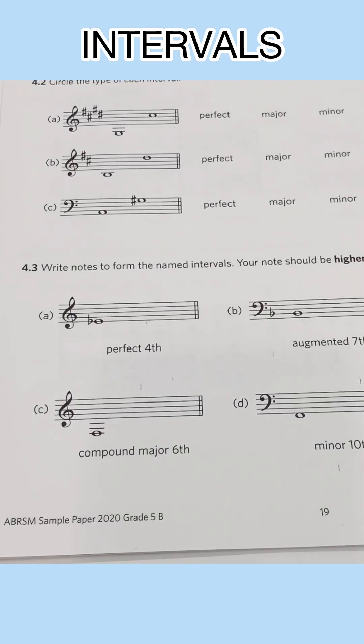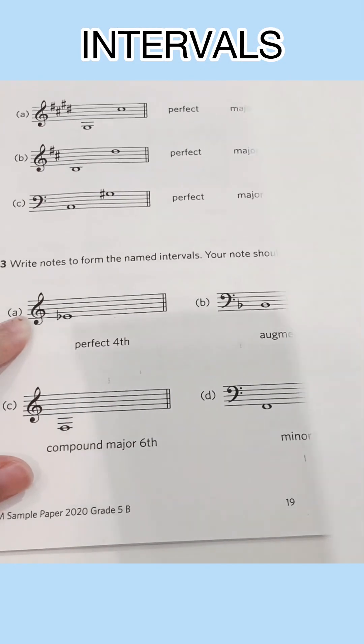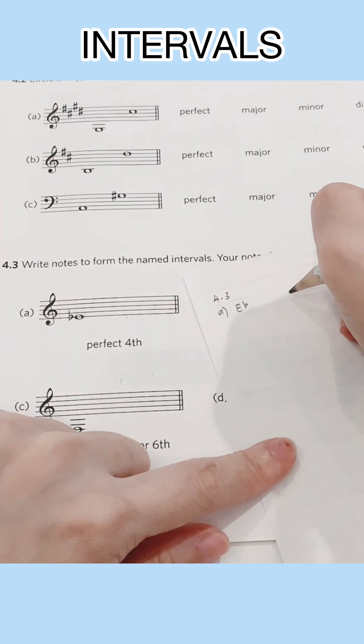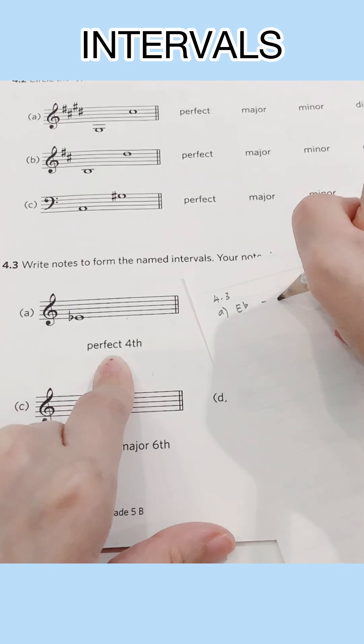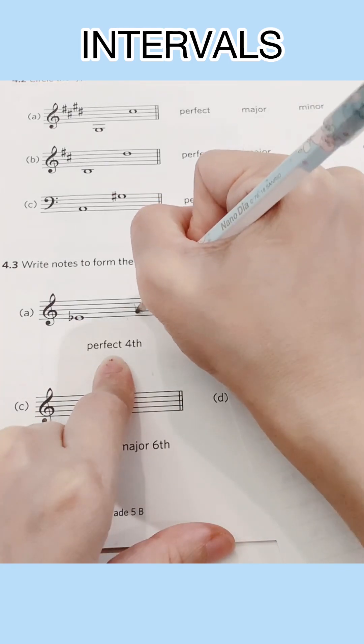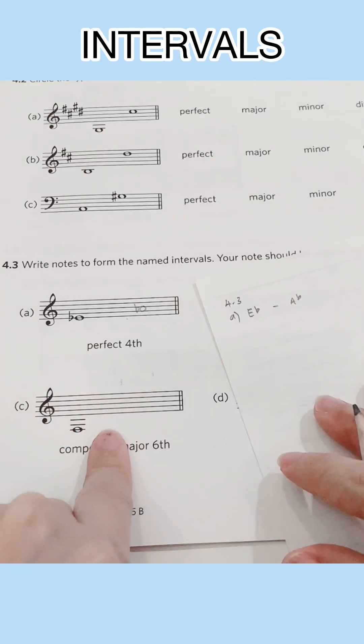For this question, you are required to write a note from the given interval. We have E flat and if we count the letter names on an E flat major scale, E flat F, G, A flat. So the answer would be A flat here.